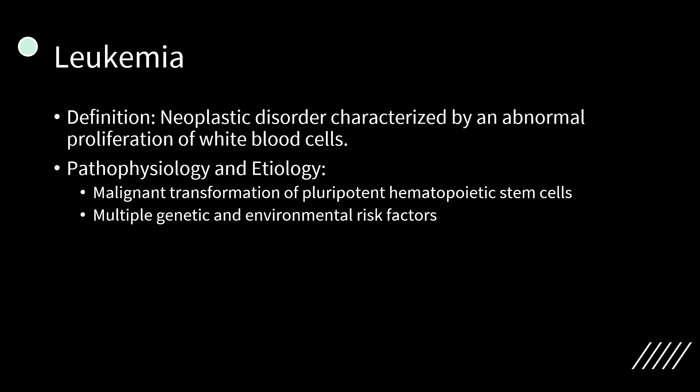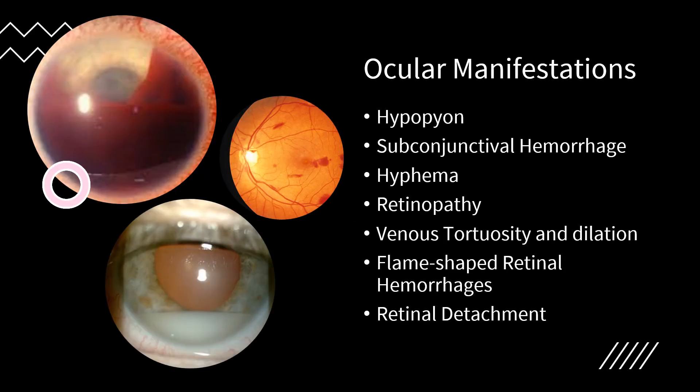Multiple genetic and environmental risk factors are identified in leukemia, including exposure to ionizing radiation, benzene, previous chemotherapy especially alkylating agents, and hematologic malignancy history. Viral infections are linked with subtypes of leukemia. Acute leukemia presents with fever, hemorrhage or bruising, and lymph node enlargement; physical exam reveals hepatomegaly, splenomegaly, and lymphadenopathy. Ocular involvement is more common in acute than chronic leukemia, and virtually all ocular structures may be involved.